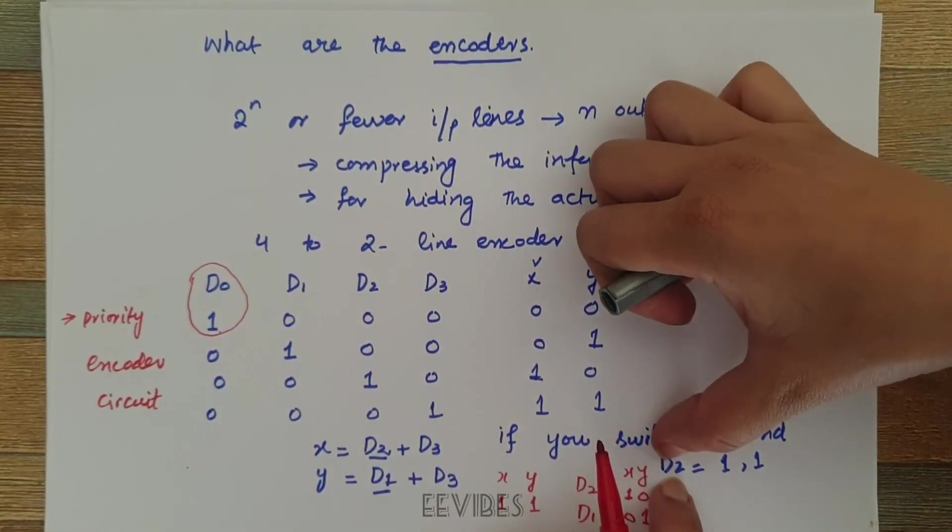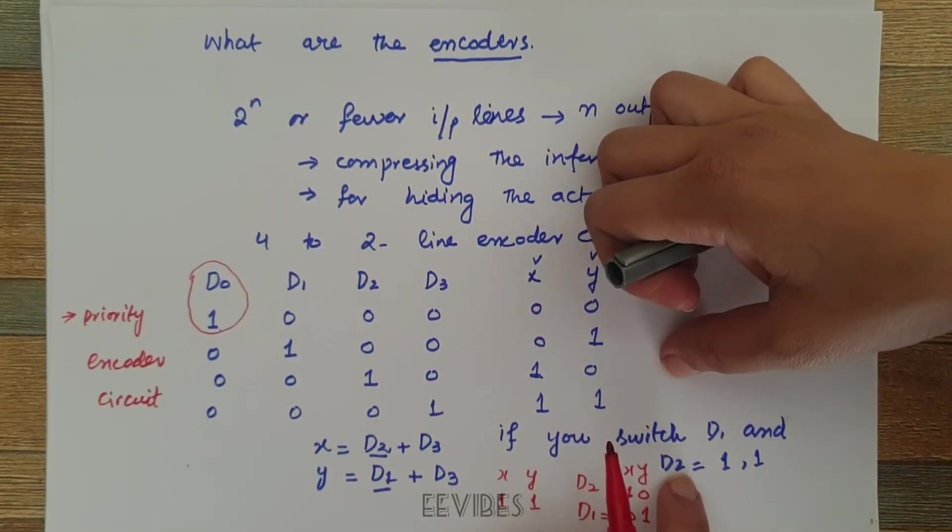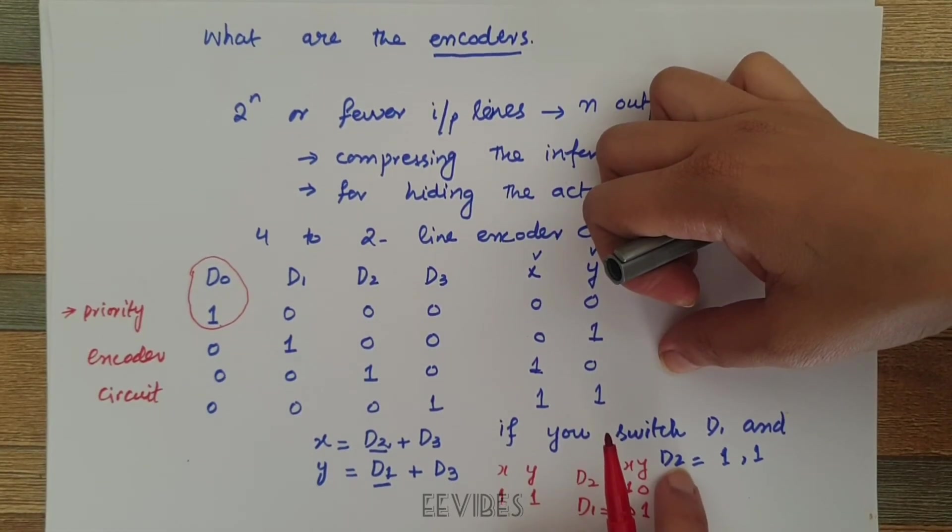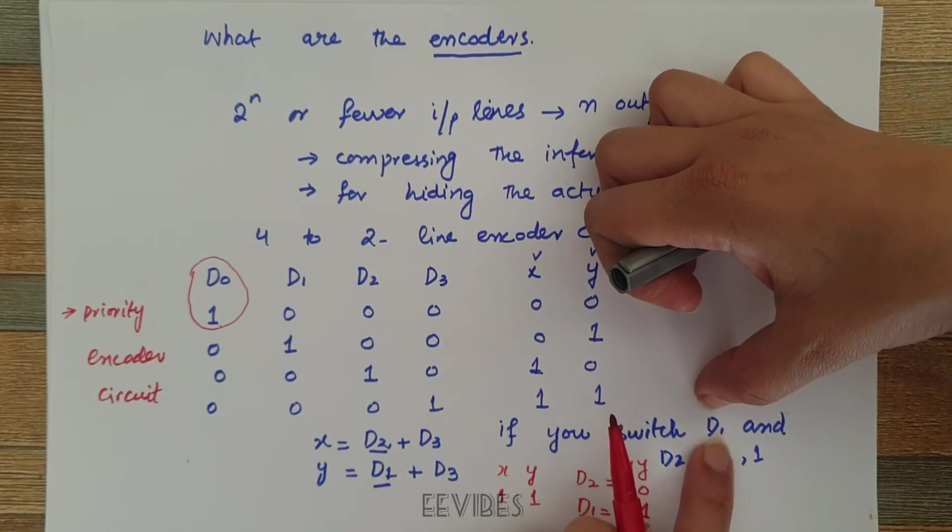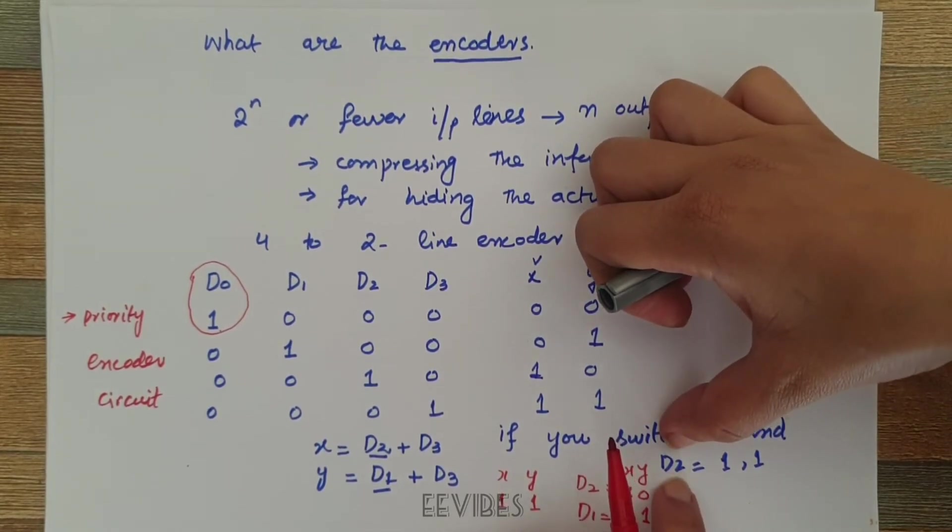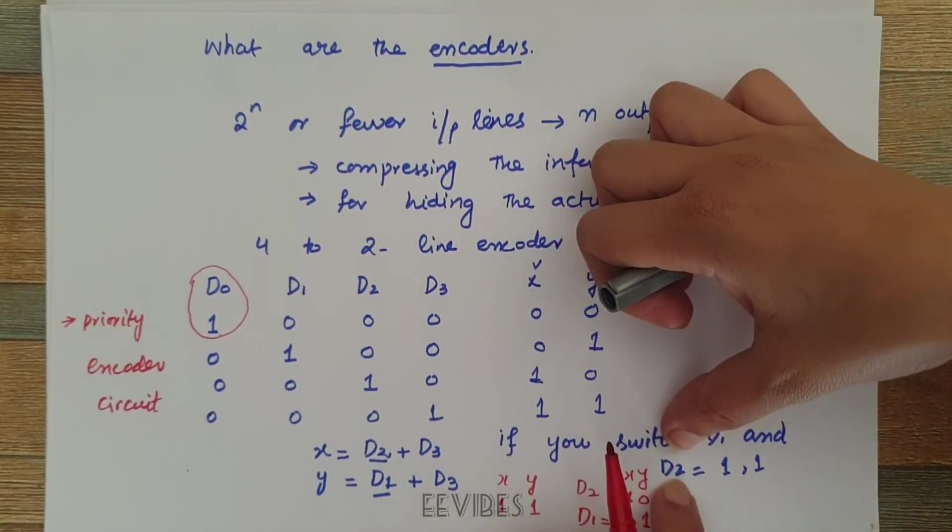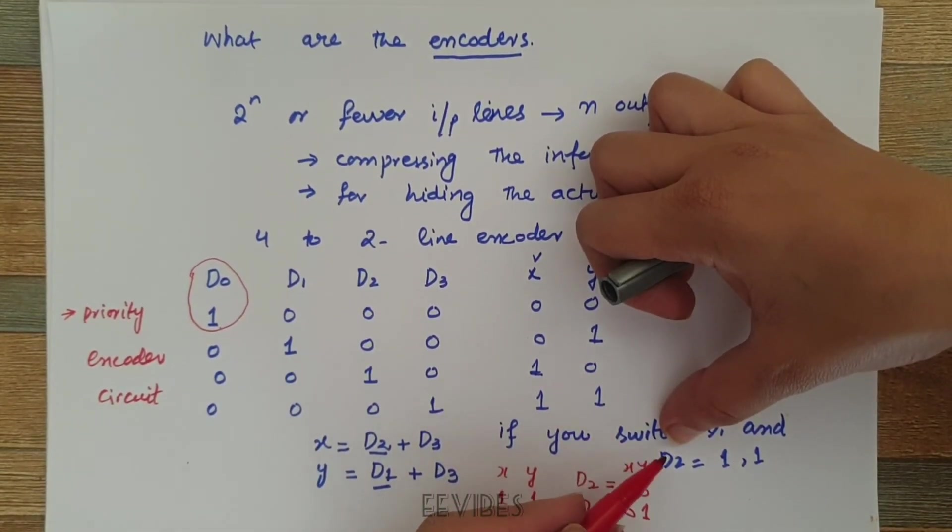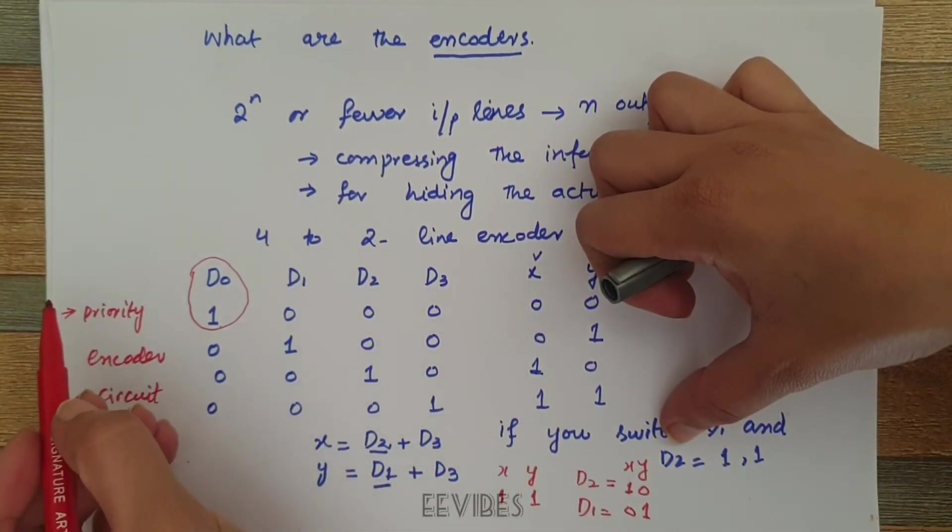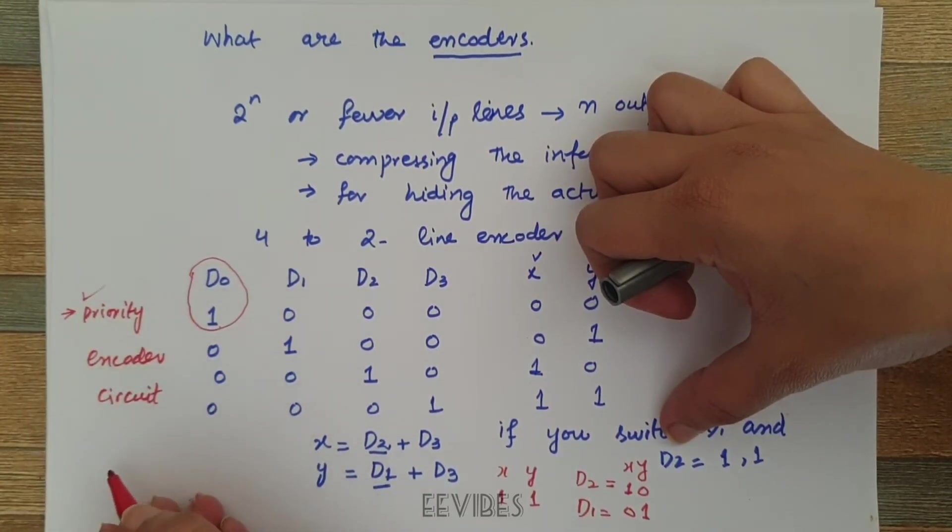So let's see if you have switched on D1 and D2 at a time. Since D2 is the higher subscripted value, no matter what the value of D1, the output will generate the code corresponding to D2. In this way you have actually prioritized the higher subscripted input line. So the first problem is solved by using the priority encoder concept.